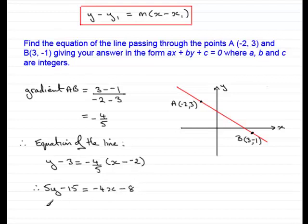And rearranging this to put it in this format, ax + by + c = 0, I'm going to add 4x to both sides and add 8 to both sides. So, that's going to give me 4x + 5y and then -15 + 8 is -7. And that's going to equal 0.